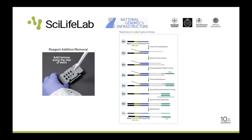We usually do the sectioning one day, then put the arrays in the minus 80 freezer. The next day we move on with fixation first. After the fixation and staining procedure, you mount the glass slide in a cassette so you can pipette individually to each sample and keep them divided. All pictures and details of this procedure can be found on the 10x website in the user guides.